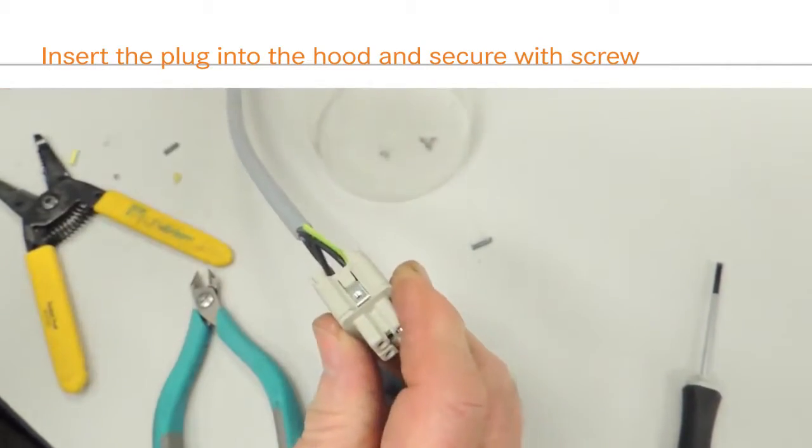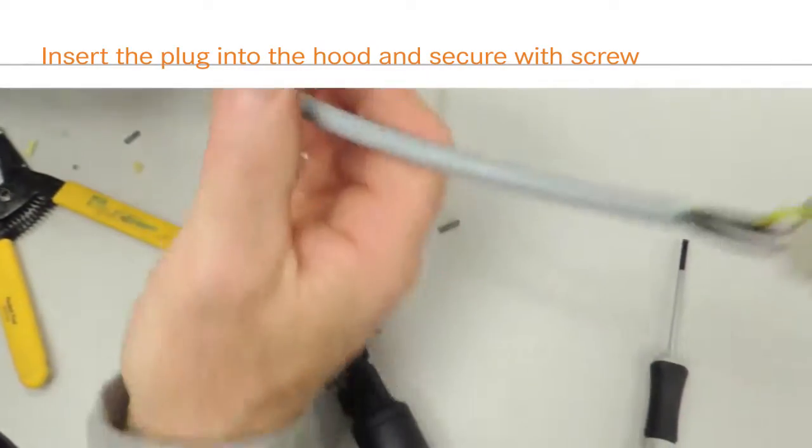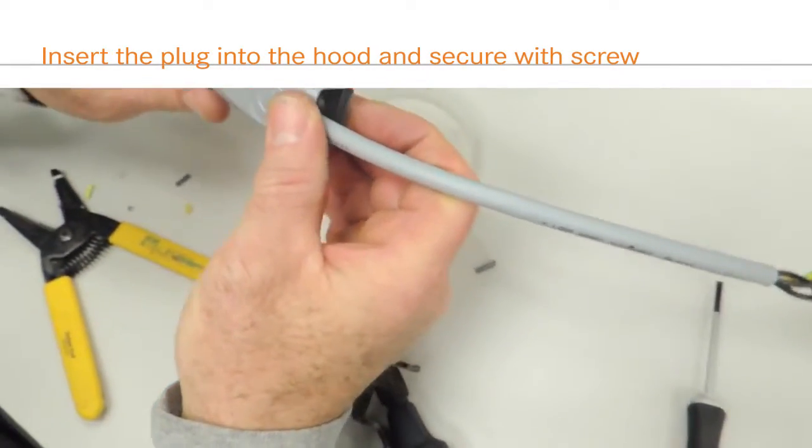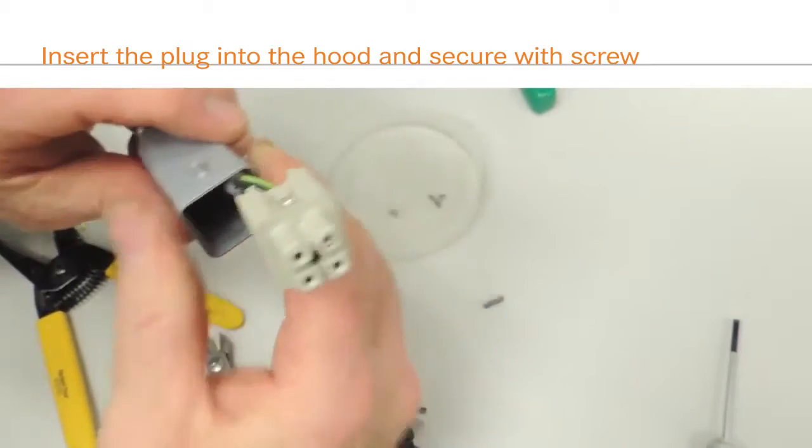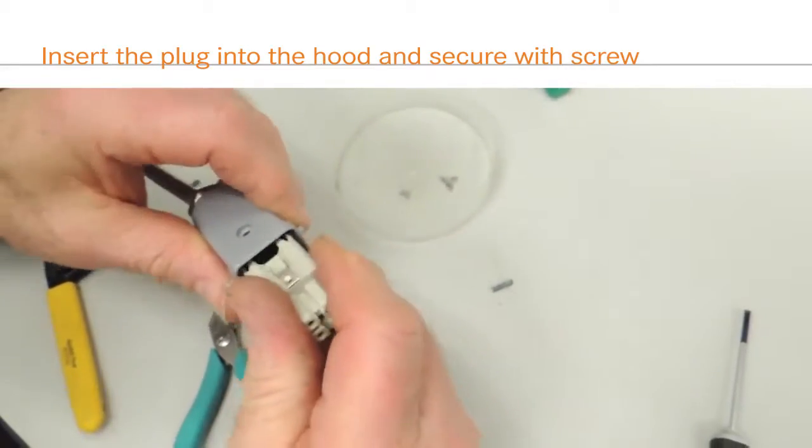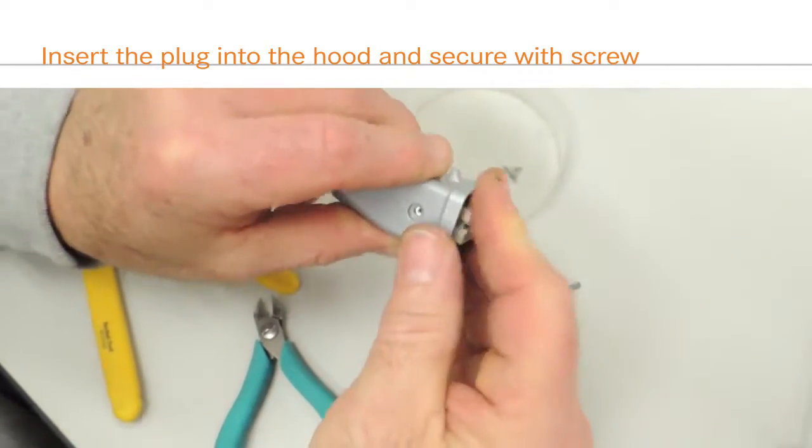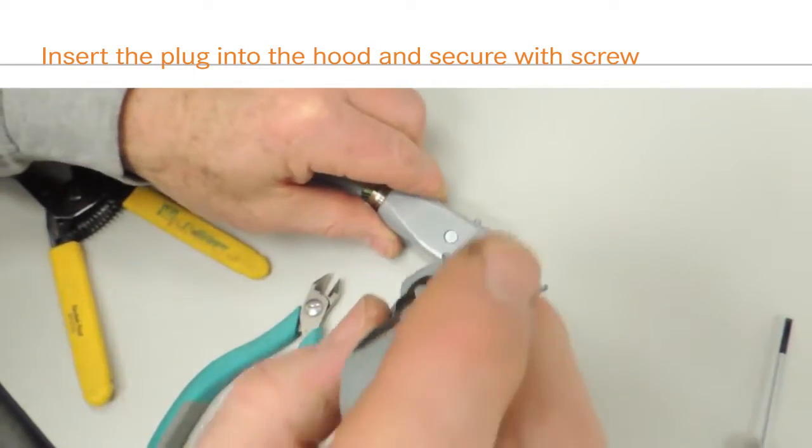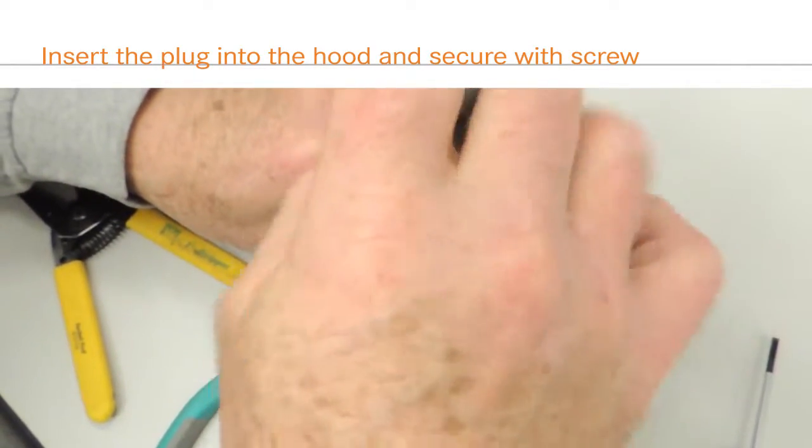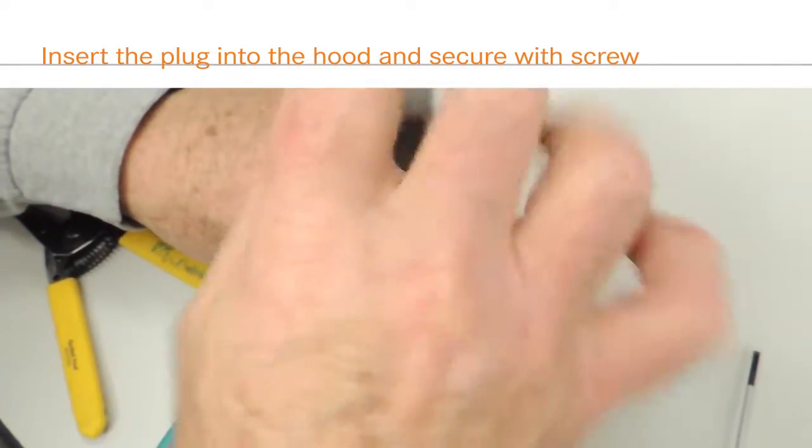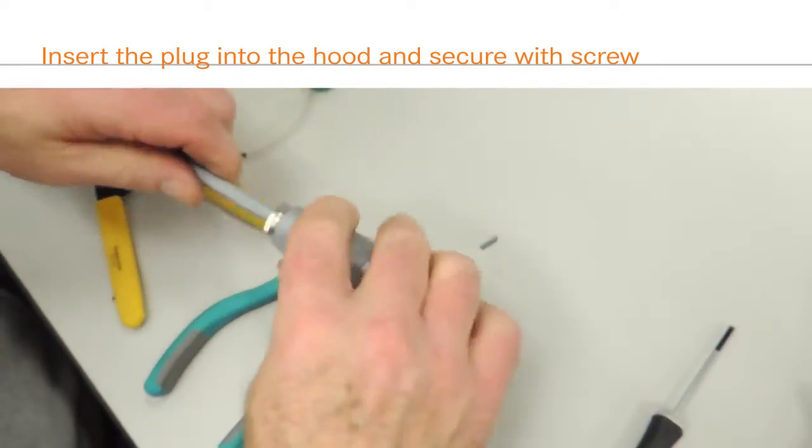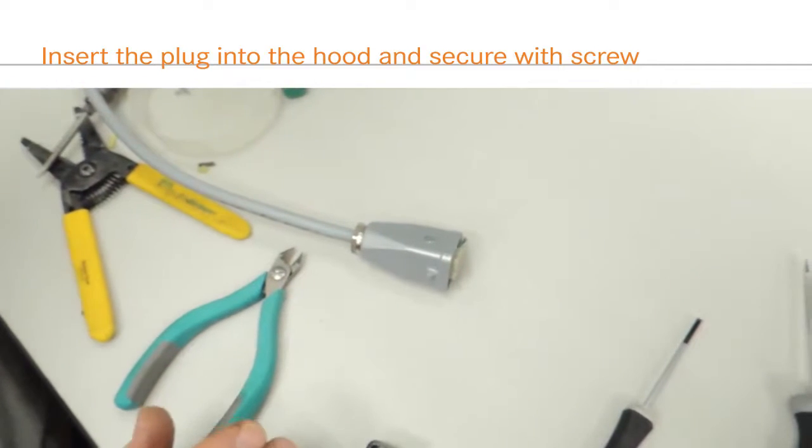The amount of outer jacket to strip is very important for creating a proper environmental seal between the hood, gland, and cable. Outer jacket stripping lengths are influenced by a number of factors, and it is difficult to determine the exact amount to remove in every case. Avoid removing too much of the jacket, as this may prevent a proper seal. For the EPIC HA3 hood, we suggest stripping 25mm of the cable jacket.